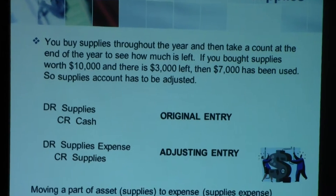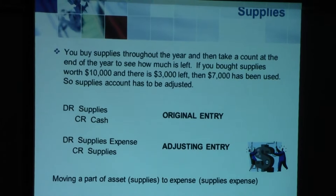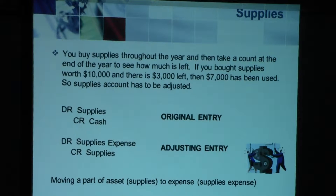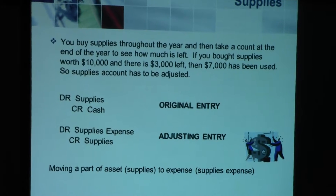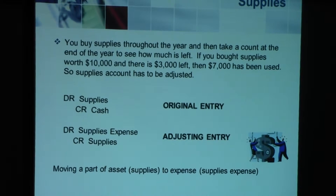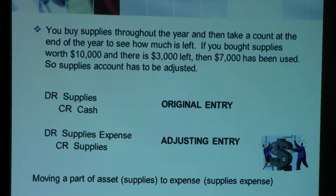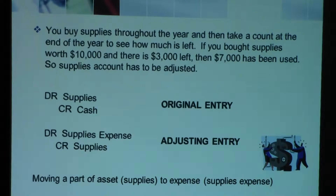The first adjusting entry we talked about was in regards to supplies. During the year, you purchase supplies and you use them. At the end of the year, let's say you count the supplies left and you have $3,000 worth remaining, which means you have used up $7,000 worth of supplies. You have to record this because you have not recorded the usage of supplies so far — what you recorded in the accounting books is the purchase of the supplies. So the original entries have been debit supplies, credit cash.